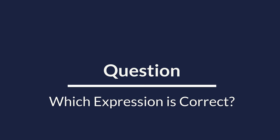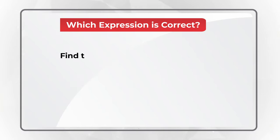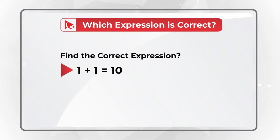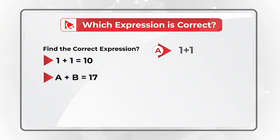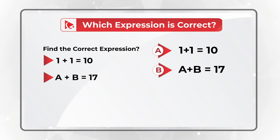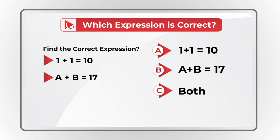Here's a very unusual question which is frequently used in a test. You need to find the correct expression. You're presented with: choice 1 plus 1 equals 10, and second choice, A plus B equals 17. You have four different options: Choice A, 1 plus 1 equals 10 is the correct expression. Choice B, the correct expression is A plus B equals 17. Choice C, both of these expressions are correct. And choice D, none of these expressions is correct.